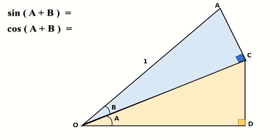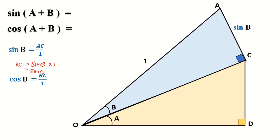Look at triangle OAC. We have sine B equal to AC over 1, so AC equals sine B. And cosine B equals BC over 1, so BC equals cosine B.